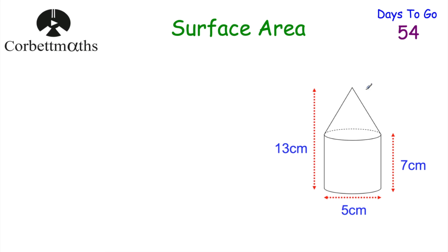Sometimes we deal with composite shapes — for example, a sphere cut in half giving a hemisphere, or shapes put together like this one here: a cylinder with a cone on top. To find the total surface area we need three parts: the area of the circle on the bottom, the curved surface of the cylinder, and the curved face of the cone on top. We don't include the circle between the cone and cylinder because that's inside the shape.